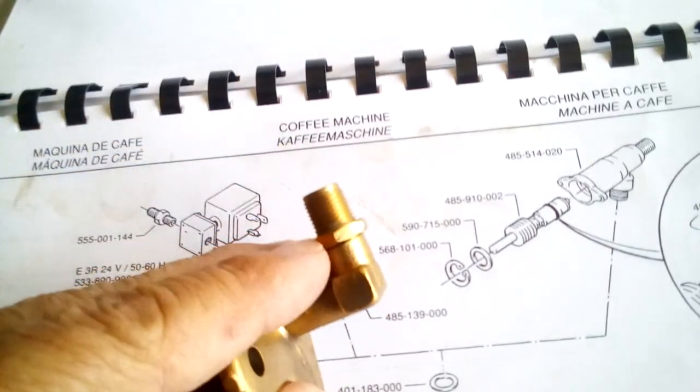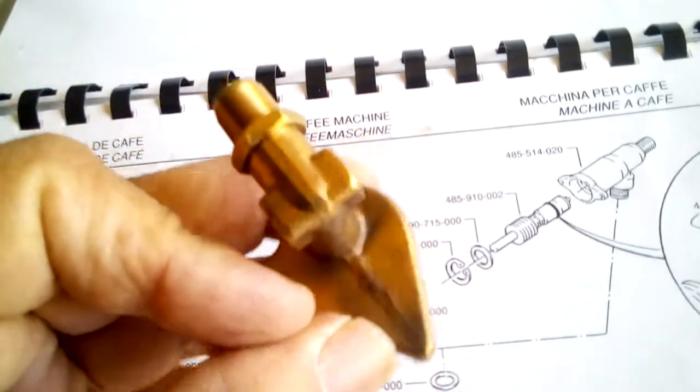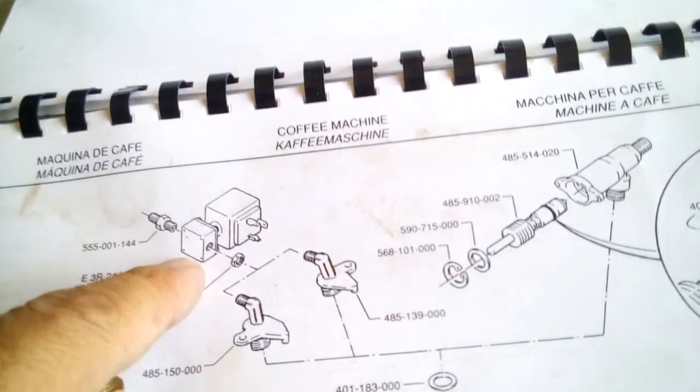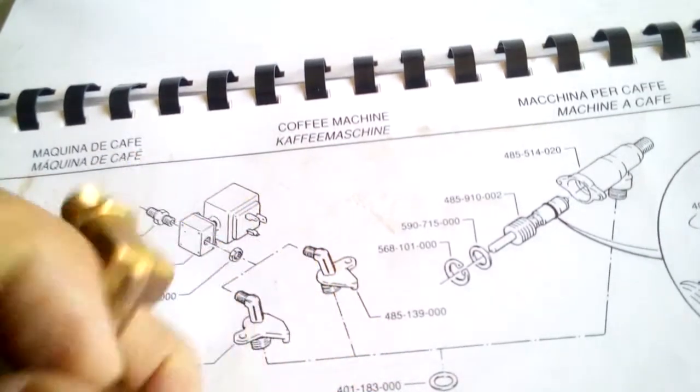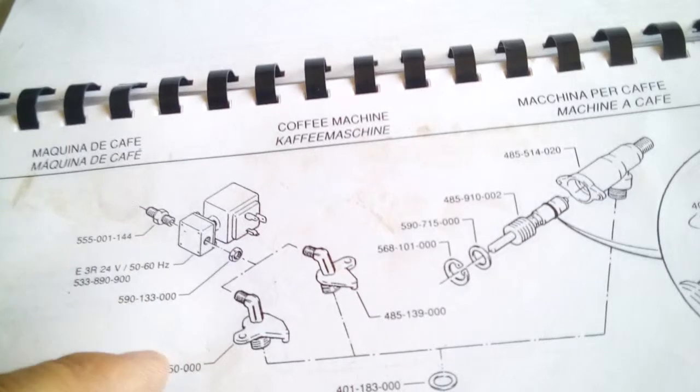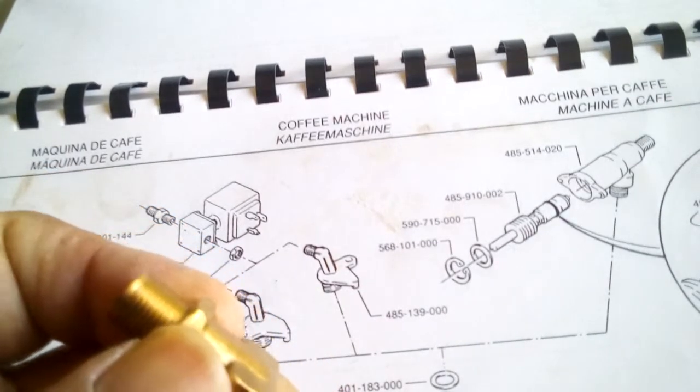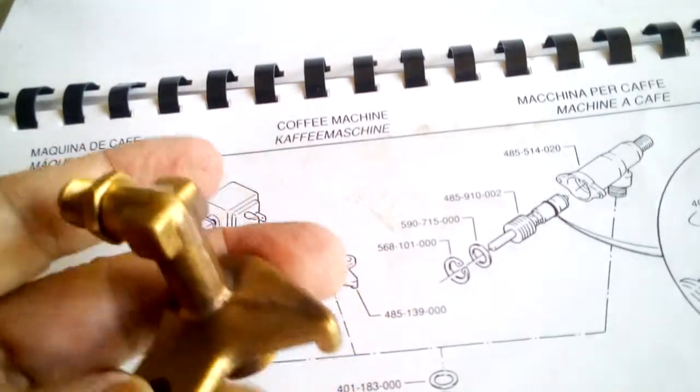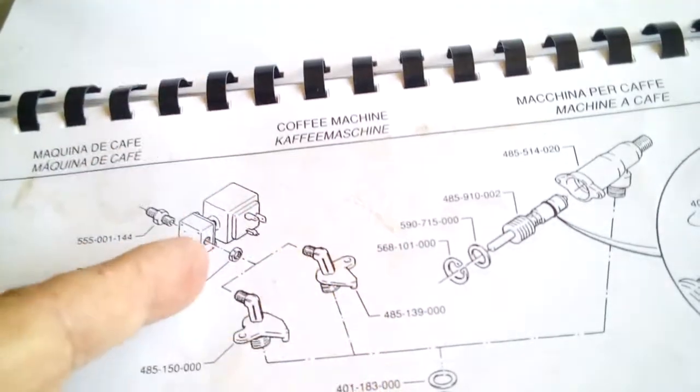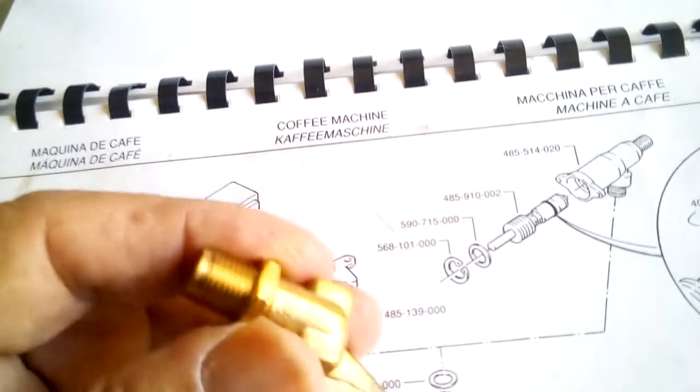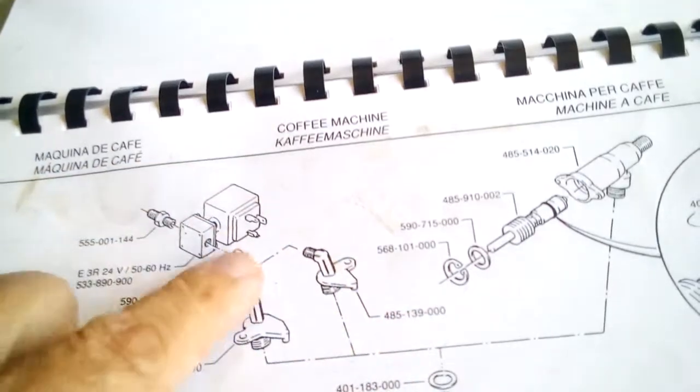Okay, and then there's a lock nut here so that when you screw this onto the valve, you use that lock nut, this one 590-133-0000. You can use it to, once you screw this into the right position to keep the valve in that position, you move this lock nut and you lock it up against the body of the valve.